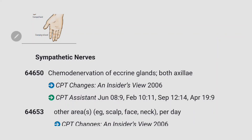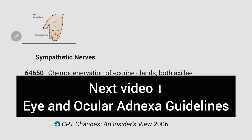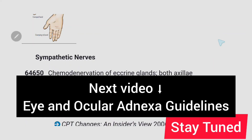Those were the important guidelines and codes related to the endocrine and nervous system. In the next video we'll study guidelines related to the eye and ocular adnexa, so stay tuned.